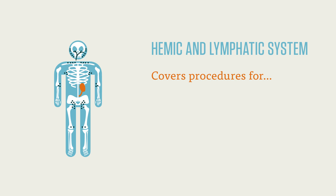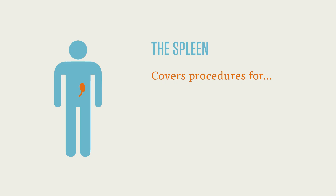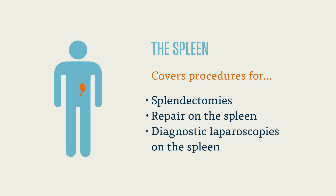The hemic and lymphatic system instead covers procedures of the spleen, bone marrow, stem cells, and the lymph nodes. The spleen is similar in structure to the lymph nodes and acts as a blood filter — hence, hemic. Here you'll find codes for splenectomies, repair on the spleen, and diagnostic laparoscopies on the spleen.